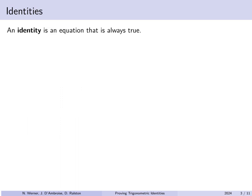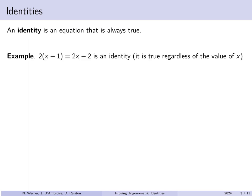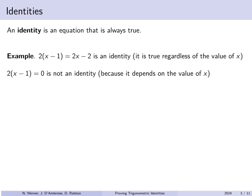An identity is an equation that is always true. For example, 2 times (x minus 1) equals 2x minus 2 is always true — it is an identity. However, 2 times (x minus 1) equals 0 is sometimes true but sometimes not. It is an equation you could solve for x, but it is not always true, so it is not called an identity.